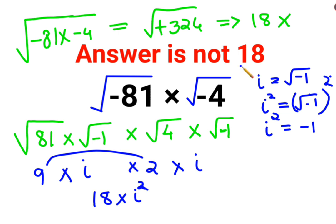So here, instead of the answer being just 18, it would be 18 into negative 1, which gets you minus 18. I hope this is very clear to everyone.